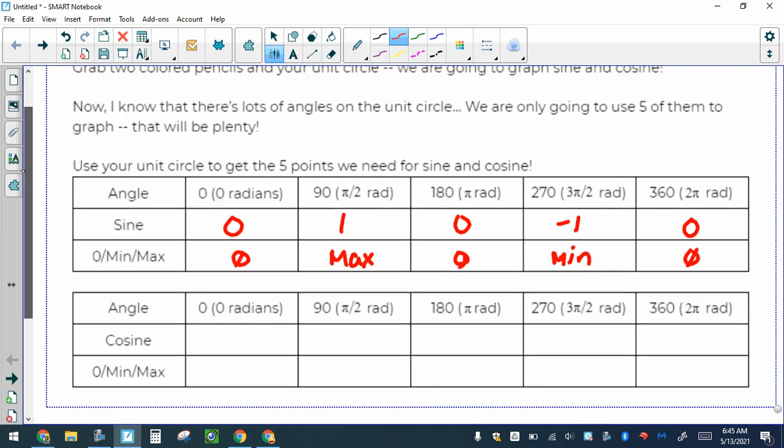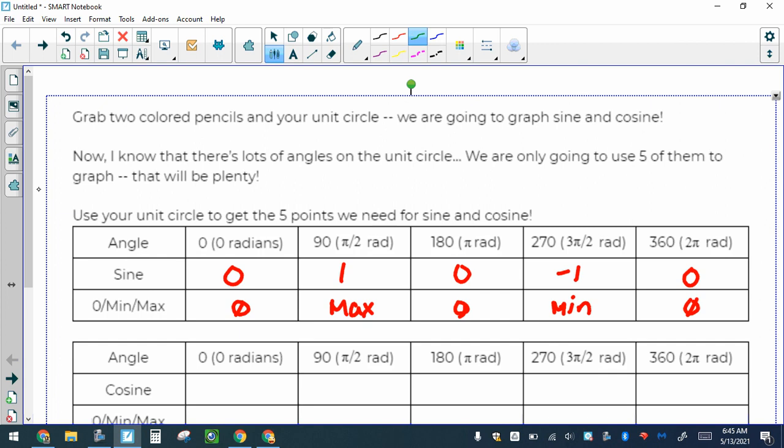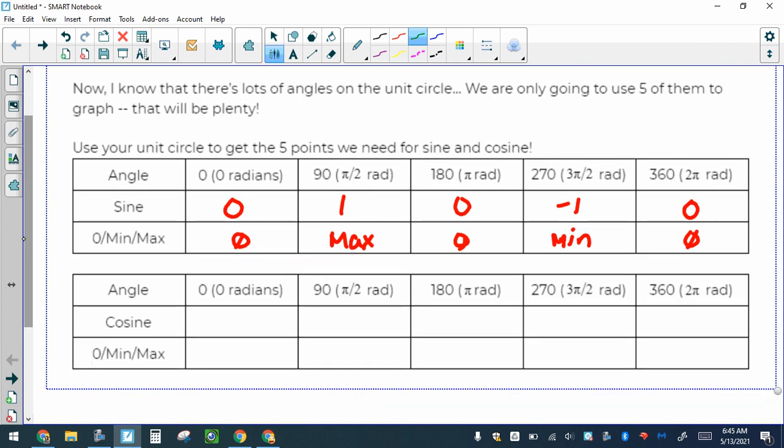Now let's do the same thing about cosine. Change your colors. First thing we're going to do is look it up on the unit circle. Cosine at 0 is 1, cosine at π/2 is 0, cosine at π is -1, cosine at 270 or 3π/2 is 0, and then cosine at 360, which is the same as cosine of 0, is 1 again.